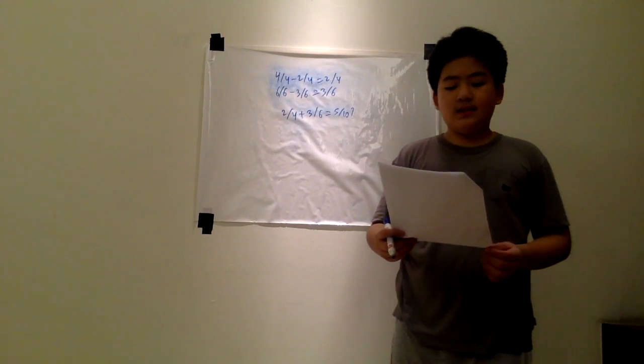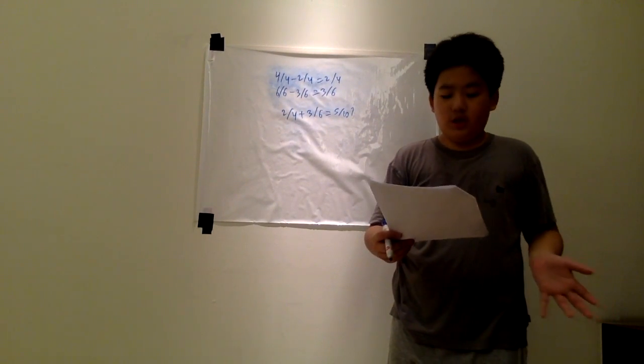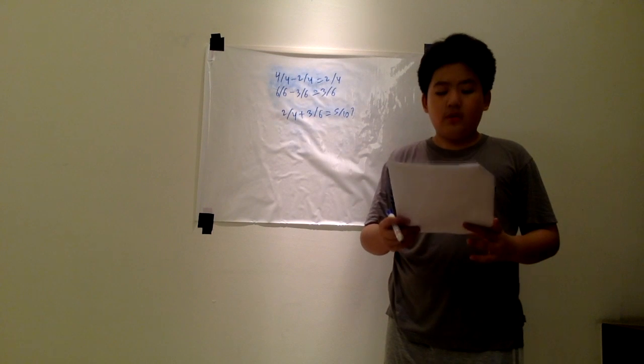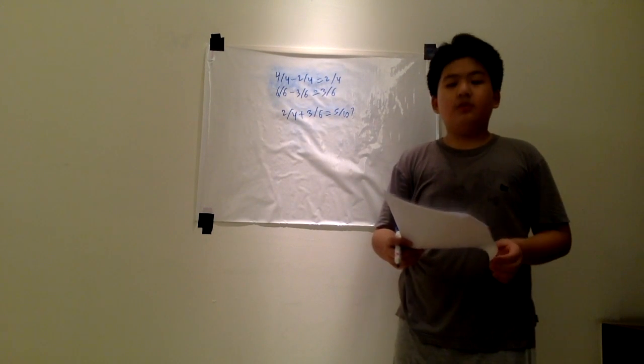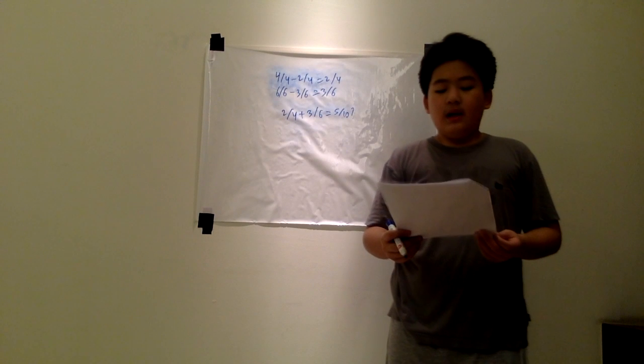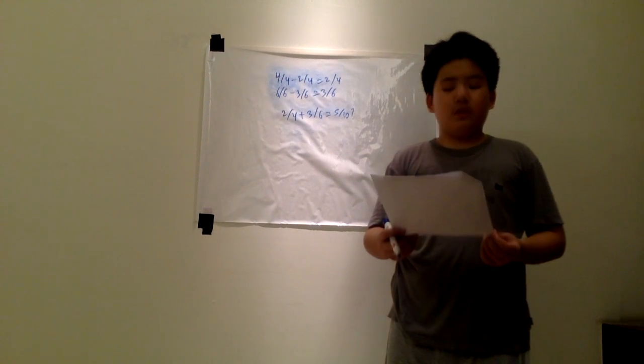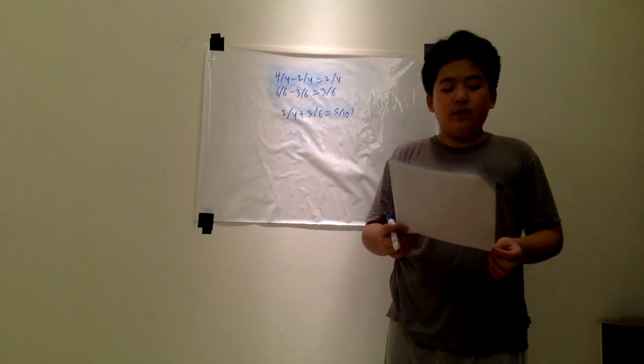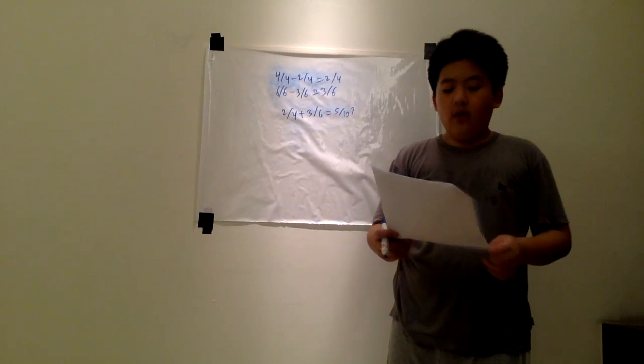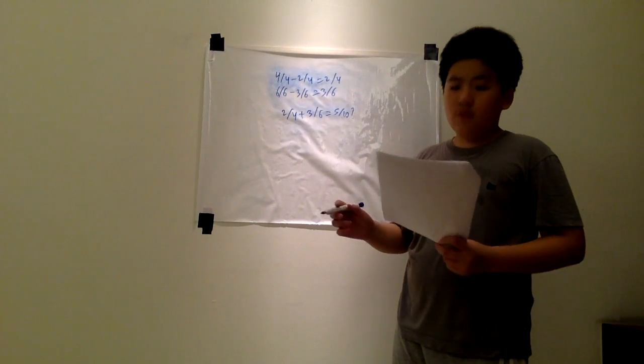For addition, you can't just add them up like multiplication. You must find the lowest common denominator first. To find it, find the multiples of each of the numbers and see if there is a multiple that is the same. The lowest common denominator for four and six is twelve.